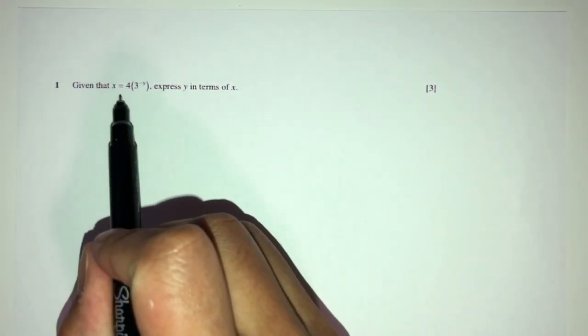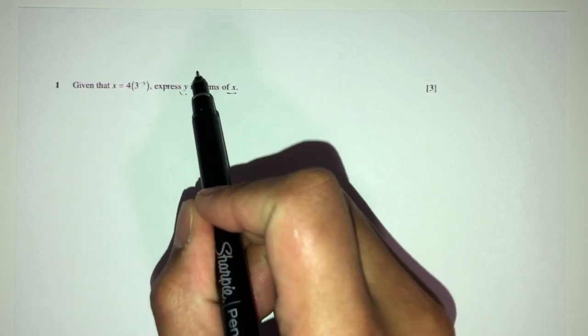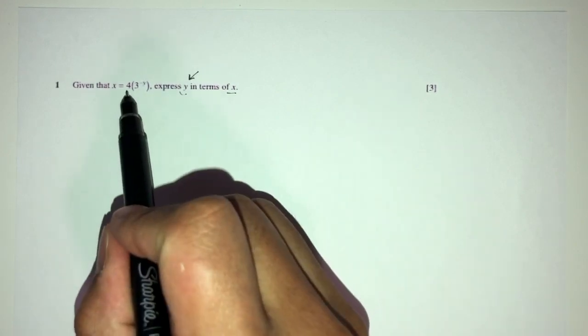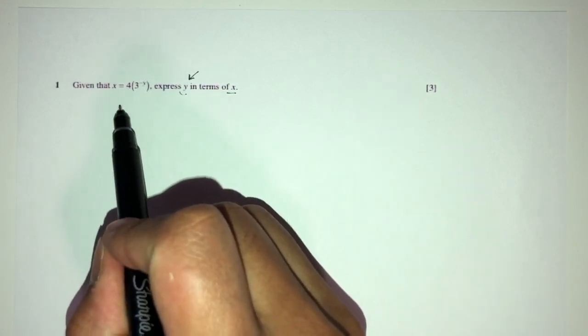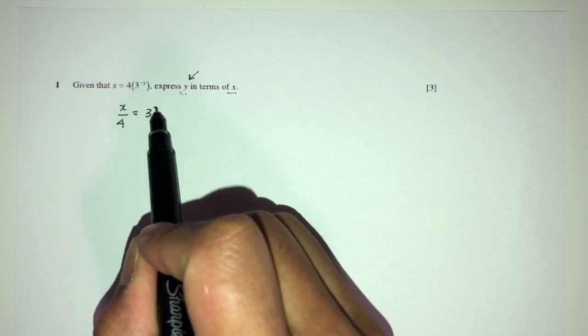Let's move on to question number 1. Here we have given x is equal to this, express y in terms of x. So, make y become the subject of formula. Let's first bring the 4 over here. You will have x over 4 is equal to 3 power minus y.